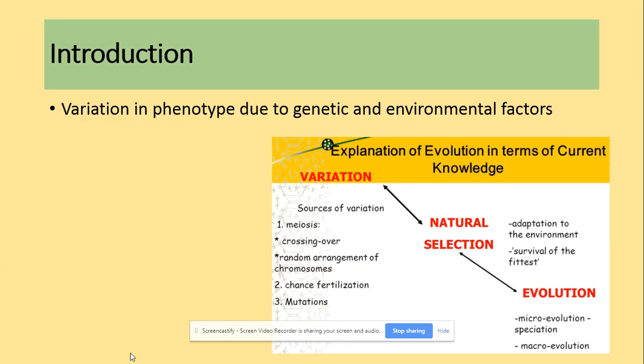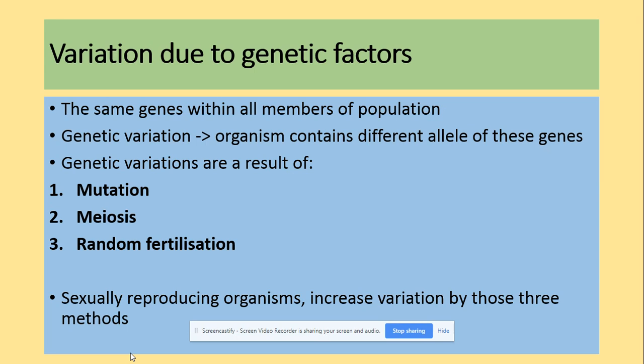Make sure you include those two key words in your answers. In terms of the variation in phenotype, as we've mentioned, it's due to the genetic and environmental factors. So you should remember from year one, genetic factors that will lead to the variation. The organism can contain different alleles of those specific genes. So the genetic variation are the results of mutation, meiosis and random fertilization. Sexually reproducing organisms increase the variation by those three methods.